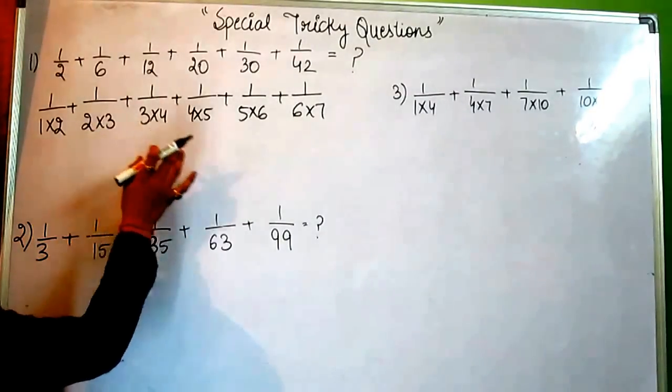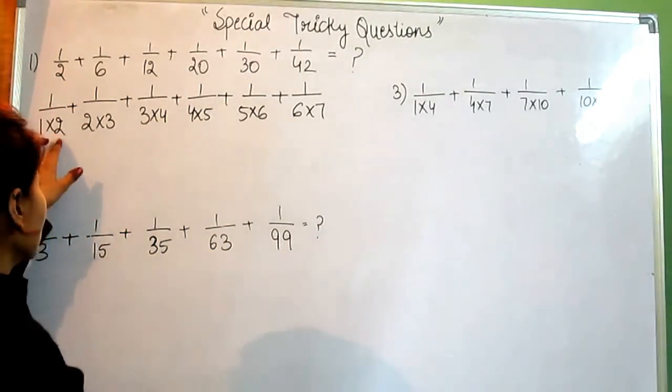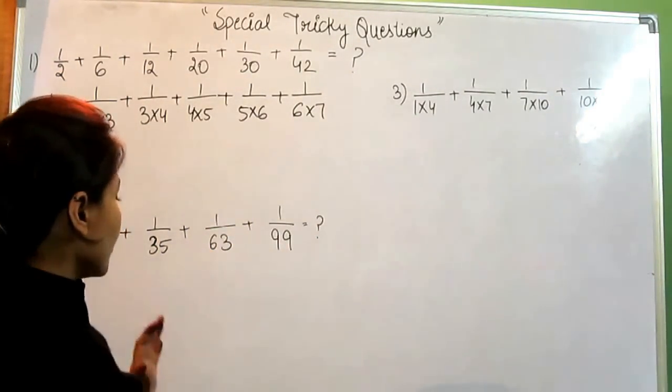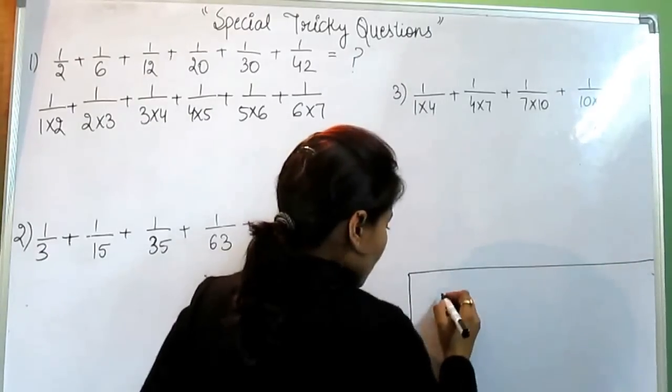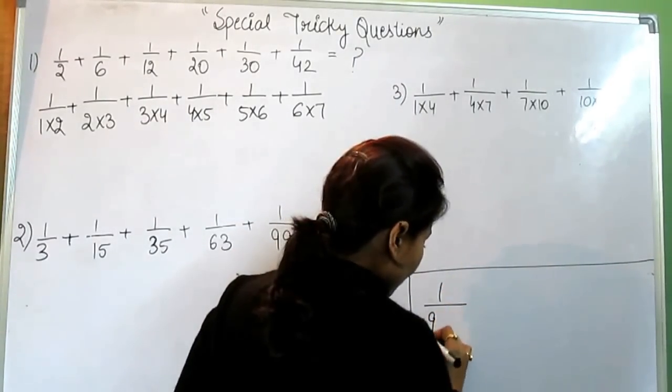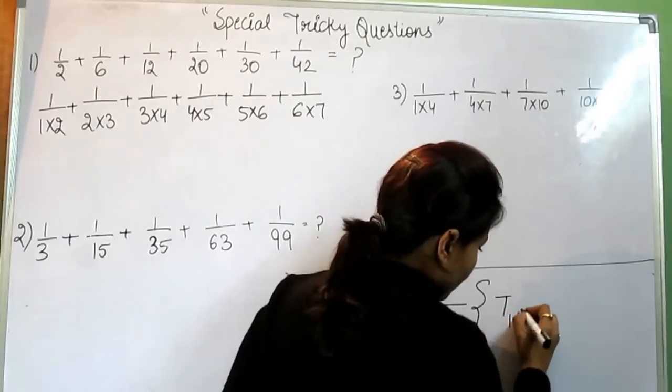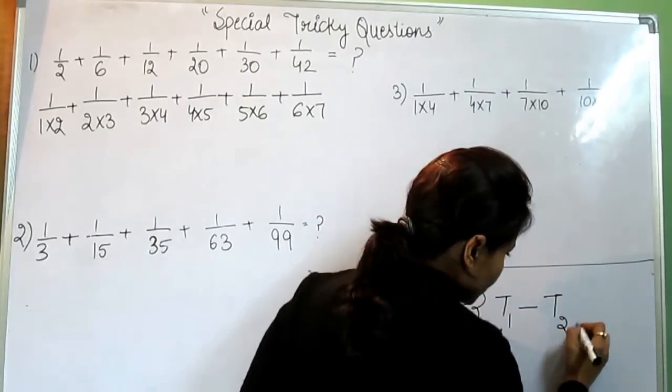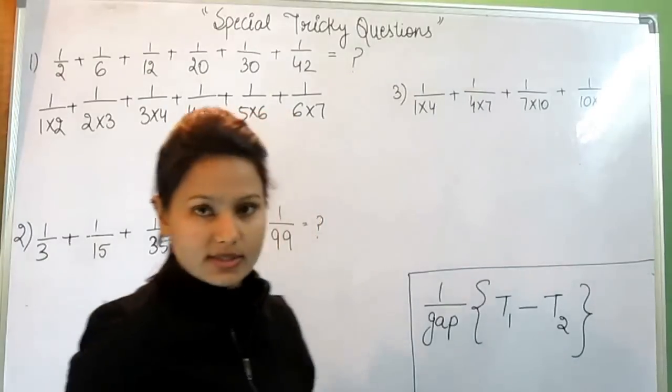1, 2, 2, 3, 3, 4, 4, 5, 5, 6, 6, 7. The gap can be added. Now, we have a formula. I'm writing here: 1 divided by gap, P1 minus P2. I will tell you what is T1 and what is T2.